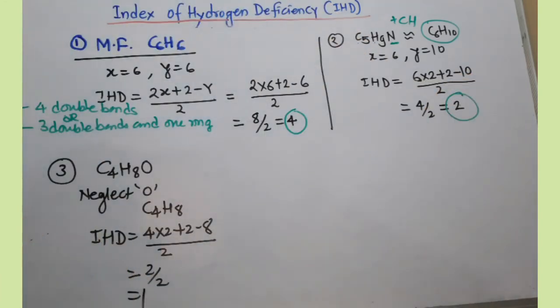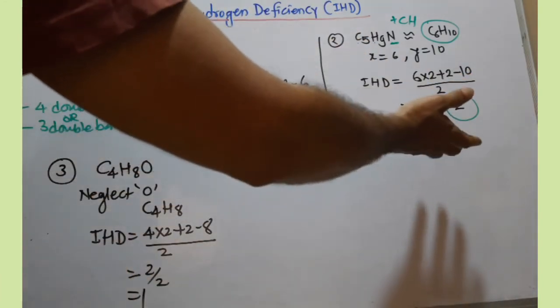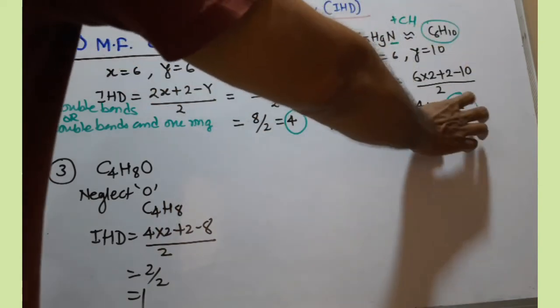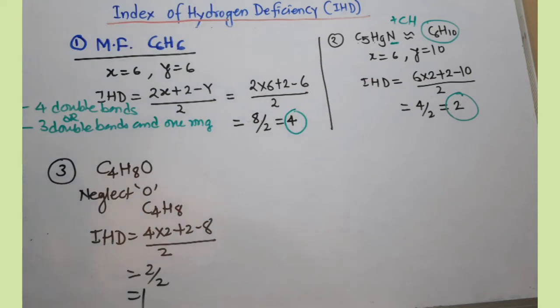Two means two double bonds, or one double bond and one ring, or one triple bond. These are the conclusions we can draw from this value two for this IHD.